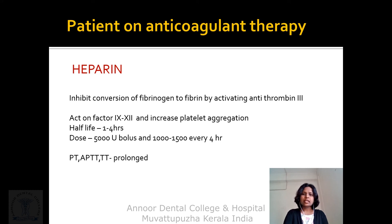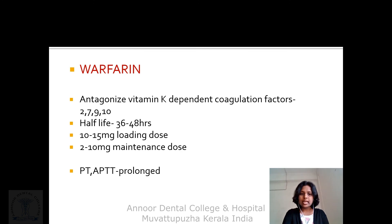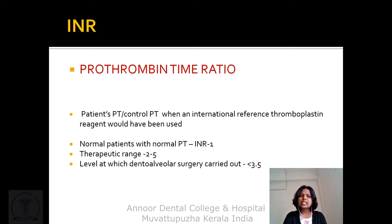Management of patients on anticoagulant therapy: anticoagulants include heparin and warfarin. Heparin inhibits conversion of fibrinogen to fibrin by activating antithrombin 3. It acts on factors 9 and 12 and increases platelet aggregation. Its half-life is 1 to 4 hours and the dose is 5,000 units, or 1,000 to 1,500 units every 4 hours. Prothrombin time will be prolonged. Warfarin is an antagonist to vitamin K, depressing coagulation factors 2, 7, 9, and 10. Its half-life is 36 to 48 hours. Both prothrombin time and APTT are prolonged. INR (international normalized ratio) is the patient's prothrombin time divided by control prothrombin time when an international reference thromboplastin reagent is used. Normal INR is 1; therapeutic range is 2 to 5. The level at which controlled dental surgery is carried out should be less than 3.5.